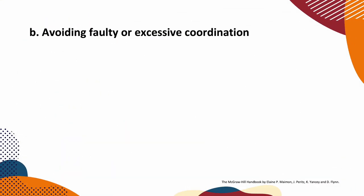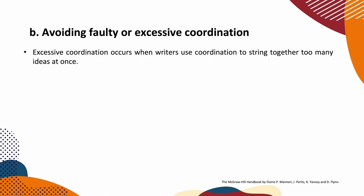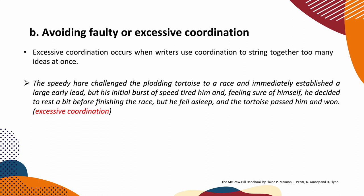Avoiding faulty or excessive coordination: excessive coordination occurs when writers use coordination to string together too many ideas at once. Like this long sentence: 'The speedy hare challenged the plotting tortoise to a race and immediately established a large early lead, but his initial burst of speed tired him, and feeling sure of himself, he decided to rest a bit before finishing the race, but he fell asleep and the tortoise passed him and won.' That's a very long sentence — easy to get lost in.